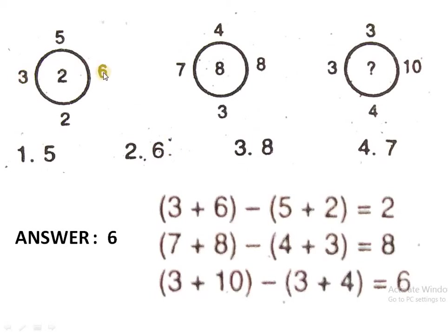Next type: add these two numbers and add those two numbers, then subtract the two sums. So 3 + 6 = 9, and 5 + 2 = 7, giving 9 − 7 = 2. Similarly, 7 + 8 = 15, and 4 + 3 = 7, giving 15 − 7 = 8. And 3 + 10 = 13, and 3 + 4 = 7, giving 13 − 7 = 6. So 6 is the correct missing number.